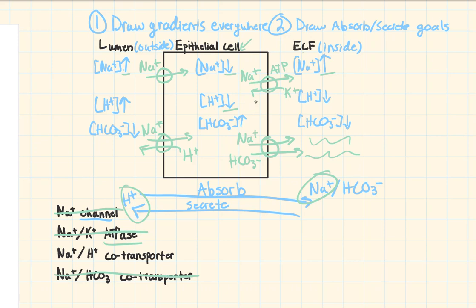Erase the ECF side, and what we are left with is the final answer. We used each protein twice — once on each side — but erased one side, leaving all four proteins drawn one time. That is our answer.